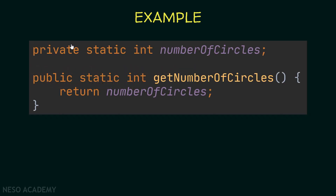Now let's talk about number of circles. I added the private keyword, so we cannot access this variable using the dot operator. Since we only want to modify it when we create a new object — inside constructors — I only created a getter method for this variable, not a setter, to prevent the user from modifying it. The getter is also a static method, so we can call it using the class name or an object, and it is public and returns an integer.